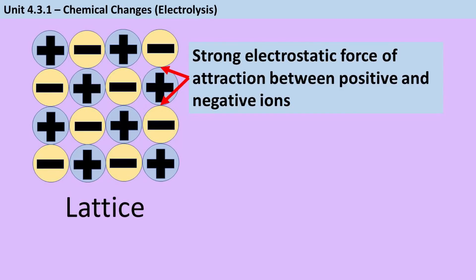Ionic compounds form lattices, 3D structures made of thousands of positive and negative ions bonded together by a strong electrostatic force of attraction acting in all directions, or an ionic bond for short.